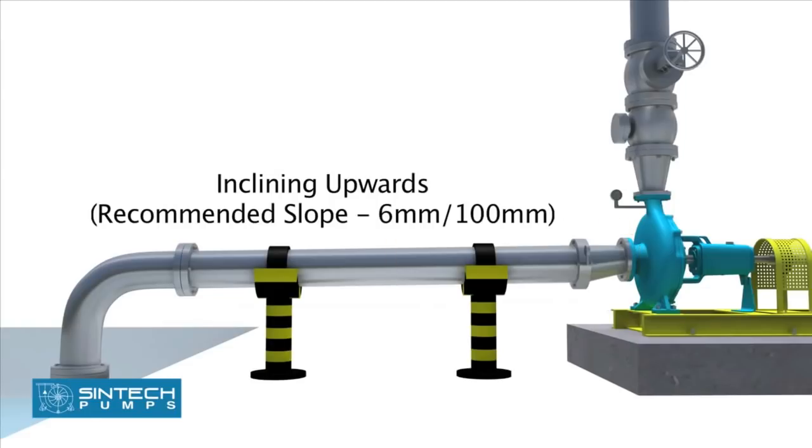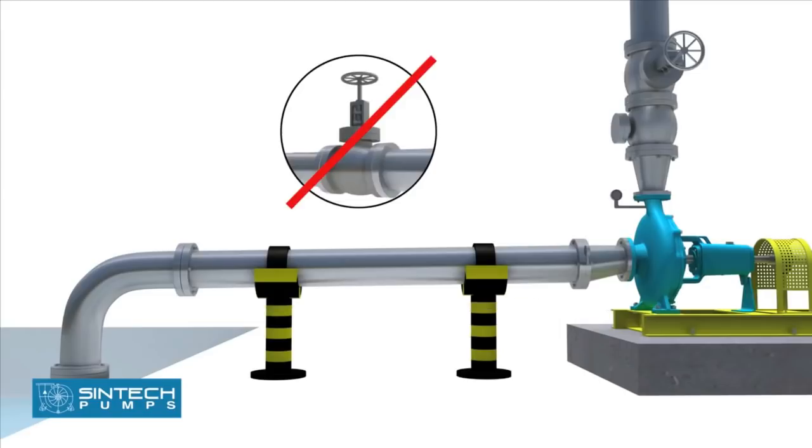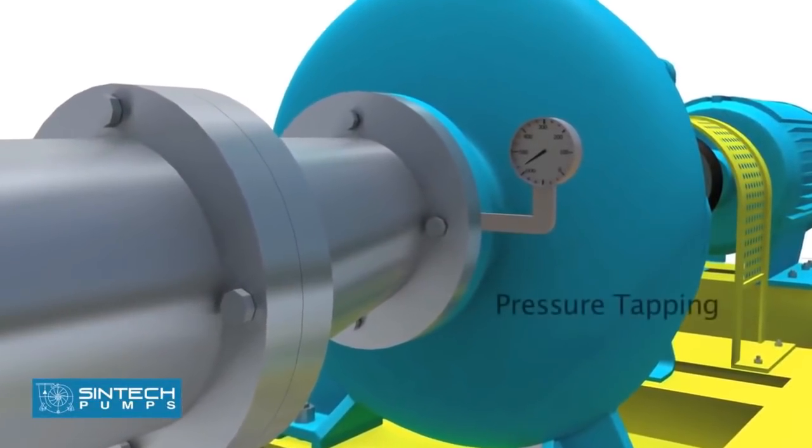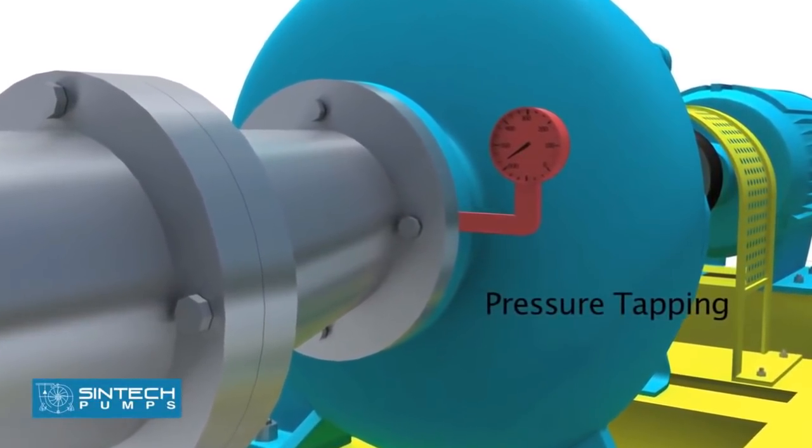All suction pipes should have a continuous rise to the pump suction inlet. Six millimeter per hundred millimeter slope is recommended. No isolation valve is recommended. There should be a tapping provided for installing a vacuum gauge in the suction line.